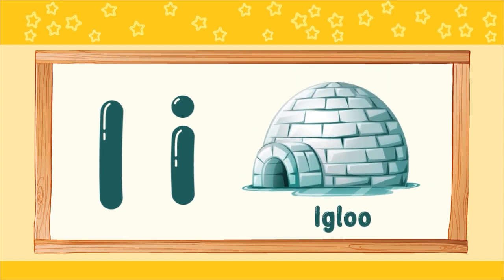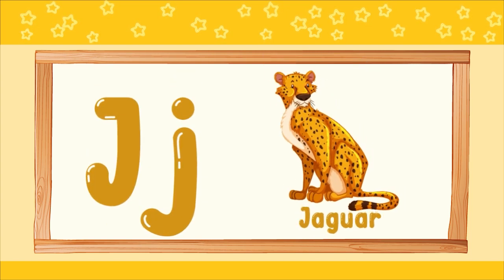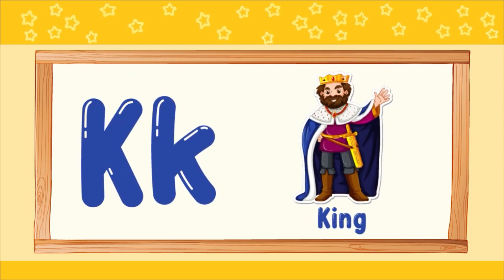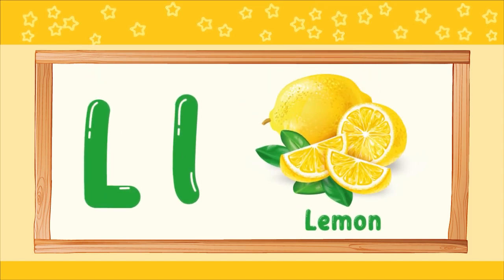I. I for igloo. J. J for jaguar. K. K for king. L. L for lemon.